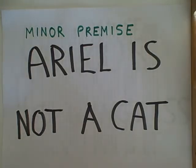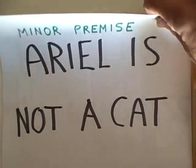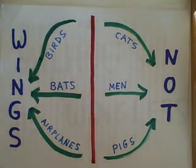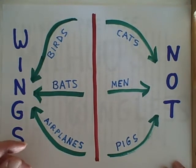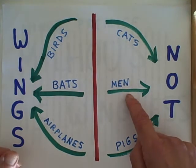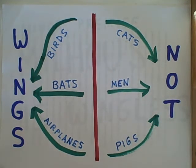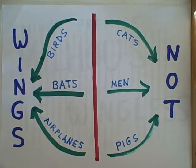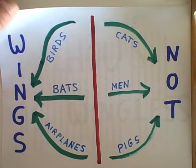Let's look at a minor premise that does not yield a valid conclusion: Ariel is not a cat. We know that Ariel is not on the cat pathway, but we don't know if Ariel is a man or a pig — in which case Ariel would still not have wings — or whether Ariel is a bird, a bat, an angel, an airplane, a butterfly, or something else that does have wings. We simply do not have enough information to classify Ariel.